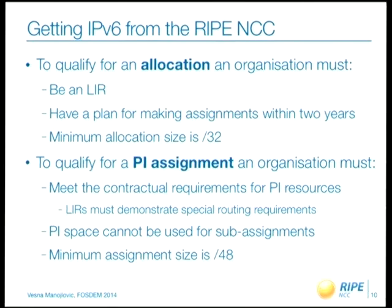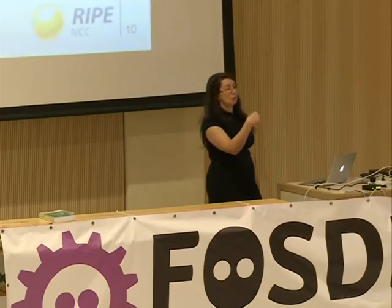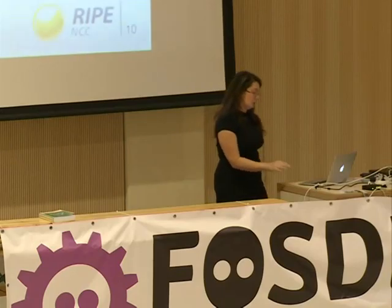If you are an ISP and a member of RIPE NCC, you can get an allocation of slash 32 size if you have a plan to start using it within the next two years. The criteria for getting an IPv6 allocation are not very hard — you just have to say you have a plan, and then you get this big chunk of IP addresses. If you don't need such a large IP space and don't want to be an LIR, you can get provider-independent addresses through another LIR, which costs 50 euros a year, though only for your own organization.